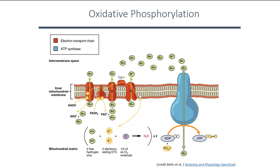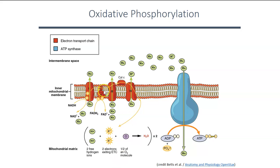Once the electrons get to the end of the chain — all redox reactions — oxygen is ready to accept those electrons and hydrogen ions and become water. This is aerobic cellular respiration: oxygen is required because once those electrons return to their ground state, something must accept them. If oxygen isn't present, this process would stop and could not continue.